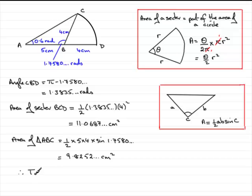So, therefore, the total area will be equal to 11.0687 and so on plus 9.8252 and so on. And what we've got then is 20.893 and so on. And if we round this to three significant figures, that's going to be 20.9 centimetre squares to three significant figures.